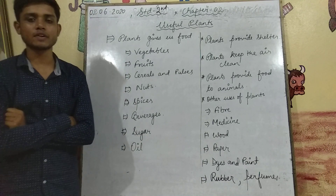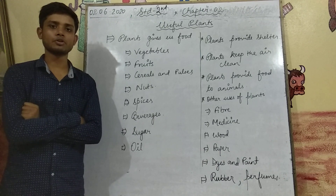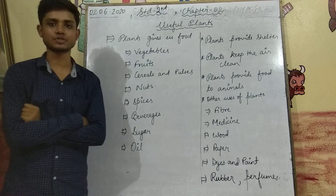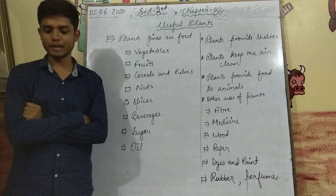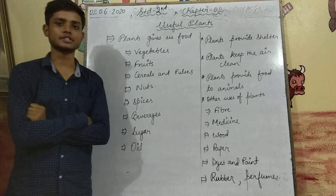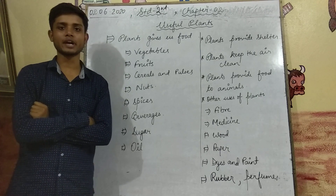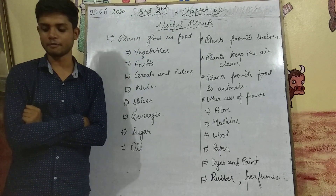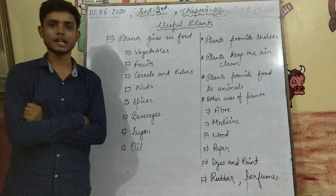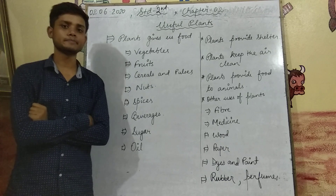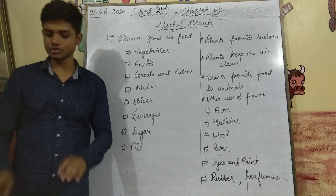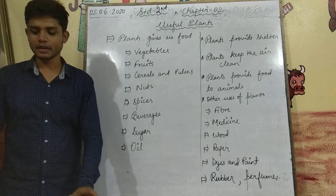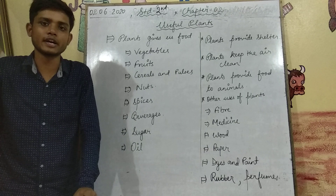Stem: potatoes and ginger — these we use in our food. Leaves: spinach and other leafy vegetables — these we use in our food. We also use flowers in our food.